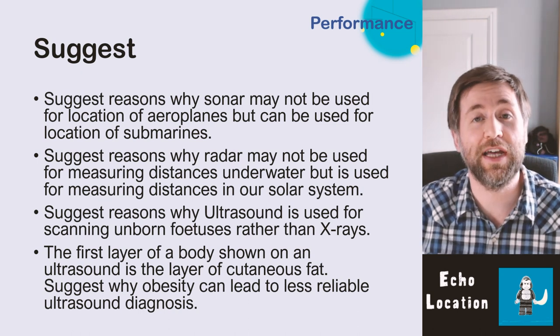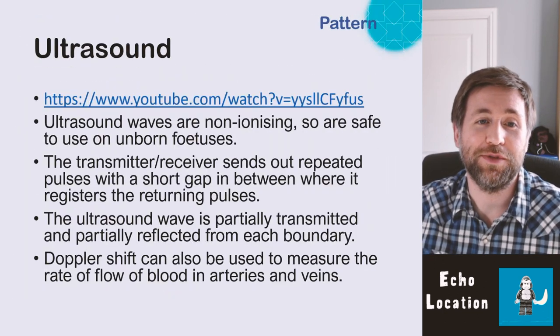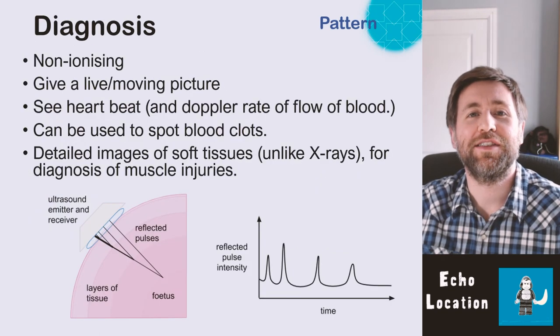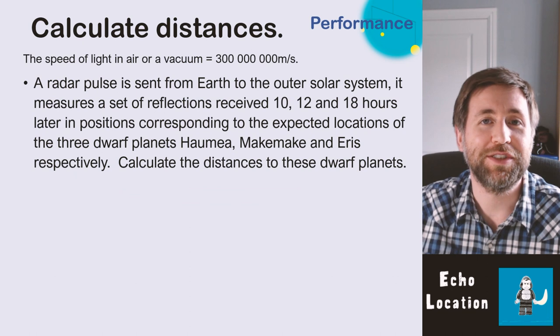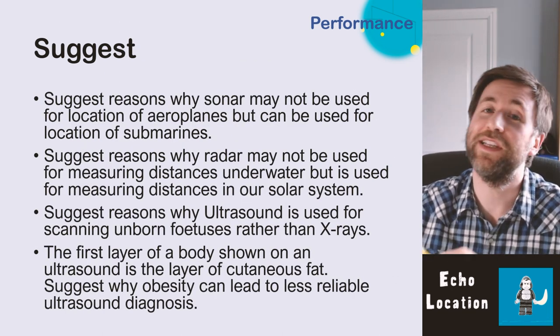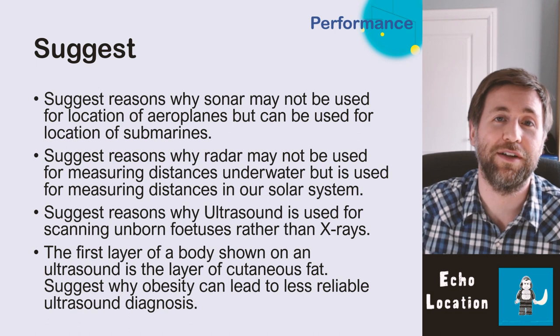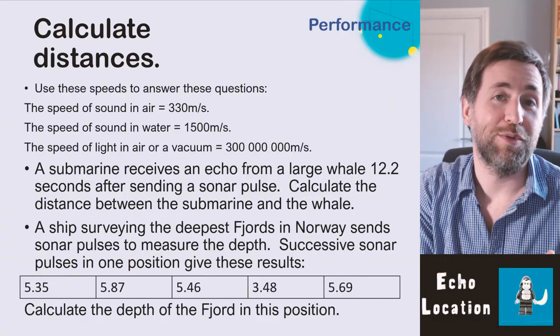Even when an idea like echolocation seems easy — send a pulse, wait for the reflection, time it, work out the distance — they can still ask very difficult questions. Revising isn't just about understanding the concept; it's about being able to solve the hardest questions they can ask. That only comes with lots of practice. Thank you for watching Guerrilla Physics — hit the like button, visit guerrillaphysics.com, and subscribe for more videos.